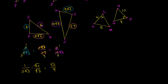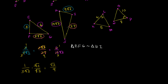So we can write the similarity statement. I'll start with E, which is between the blue and the magenta side — and that corresponds to H. Then along the blue side to F, and the blue side over there goes to I. Then along the orange side to G, and the orange side goes to J. So triangle EFG is similar to triangle HIJ by side-side-side similarity. They're not congruent sides — they all just have the same ratio or scaling factor.